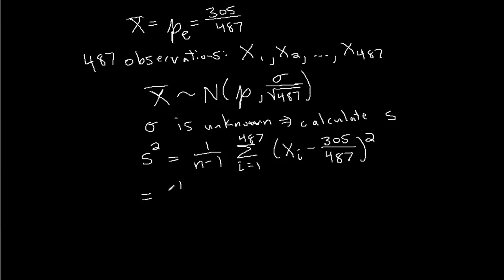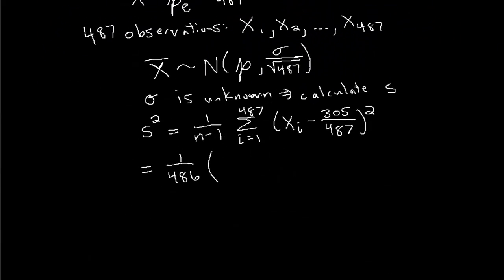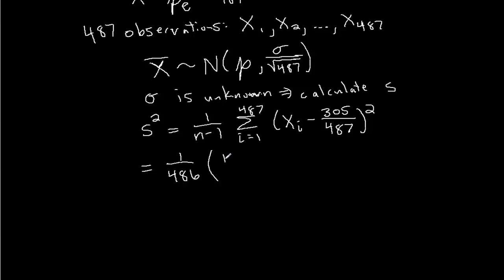So what's that look like? It's 1 over 486 times, well xi can only have two values, value 1 or value 0. And we see that 305 respond correctly, so it has value 1 305 times, and it has value 0, if you subtract you get 182 times. So we have 182 of these terms are going to be 0 for xi, 0 minus 305 over 487 squared, plus 305 of the terms are going to be 1.